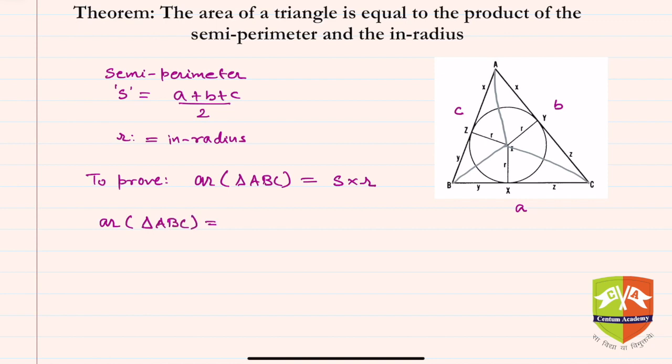Area of triangle ABC will be equal to area of triangle AIB plus area of triangle BIC plus area of triangle CIA. These are the three triangles which added together will give you the area. This is the first one, this is the second one, and the third one is the one which is left in white.